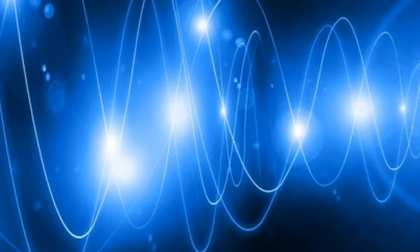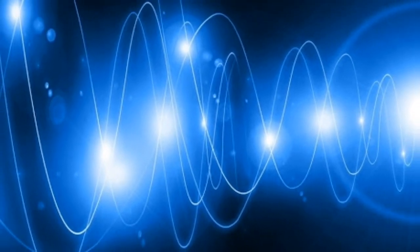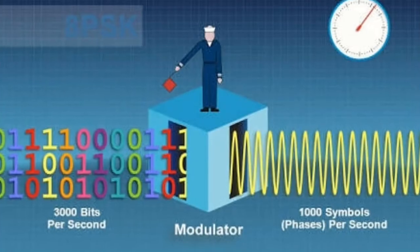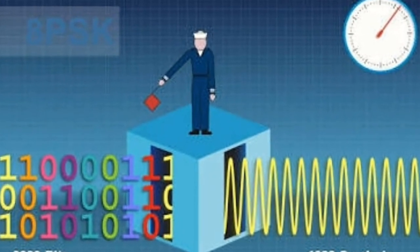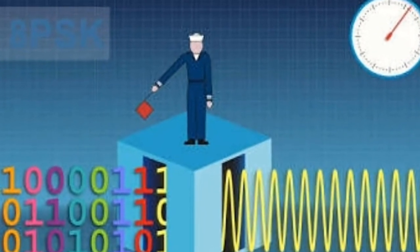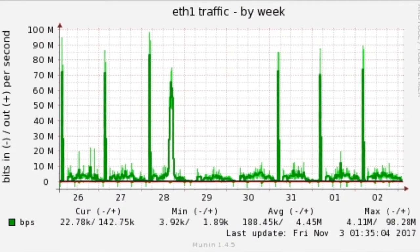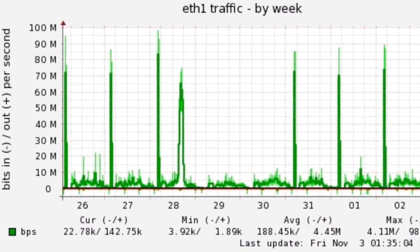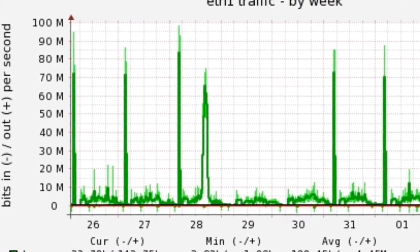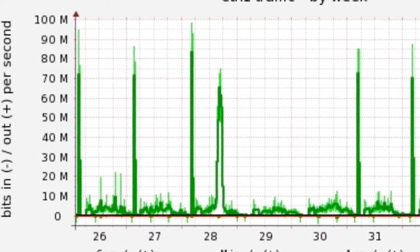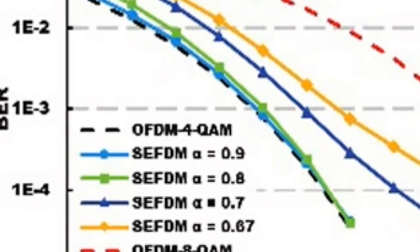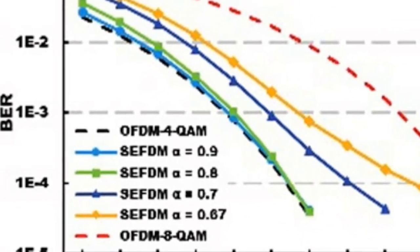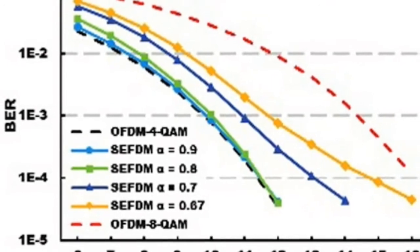1 KBPS equals 1 kilobyte per second; 1 MBPS equals 1 megabyte per second; 1 GBPS equals 1 gigabyte per second. Because 1 byte equals 8 bits, converting these ratings to the corresponding lowercase b form can be done simply by multiplying by 8. So 1 KBPS equals 8 kilobits per second, and 1 MBPS equals 8 megabits per second.